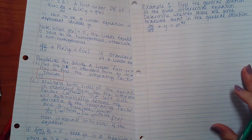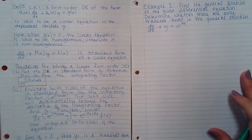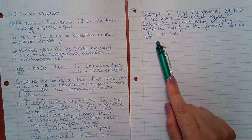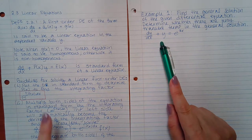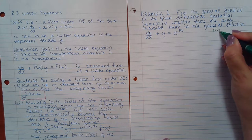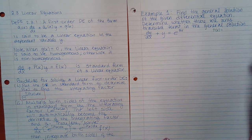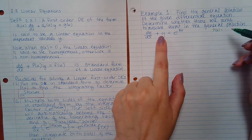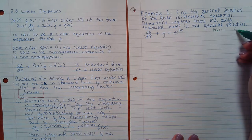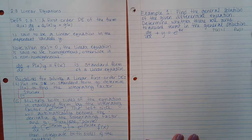Let's look at example one: find the general solution of the given differential equation and determine whether there are any transient terms. First, I need to make sure that's in standard form. Does it follow the form dy/dx + P(x)y = f(x)? It does. What is P(x)? That's the function in front of y — it has an invisible coefficient of one. And f(x) is e^(3x), whatever's on the right-hand side.